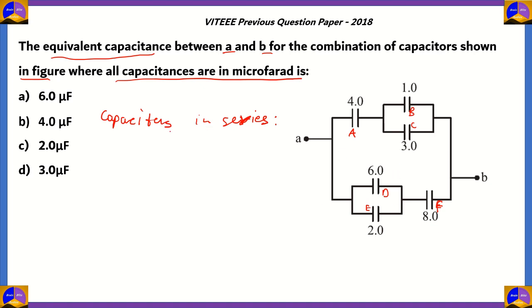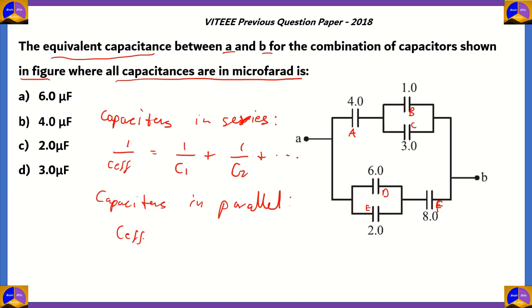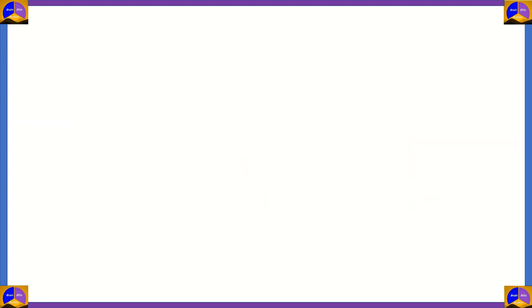For capacitors in series, 1 by C_effective equals 1 by C1 plus 1 by C2 and so on. For capacitors in parallel, their capacitances can be added directly to find the effective capacitance. Now that we know both of these ideas, let's start solving. We should first find out which capacitances are in parallel and which are in series. Capacitors B and C are in parallel, and capacitors D and E are also in parallel.